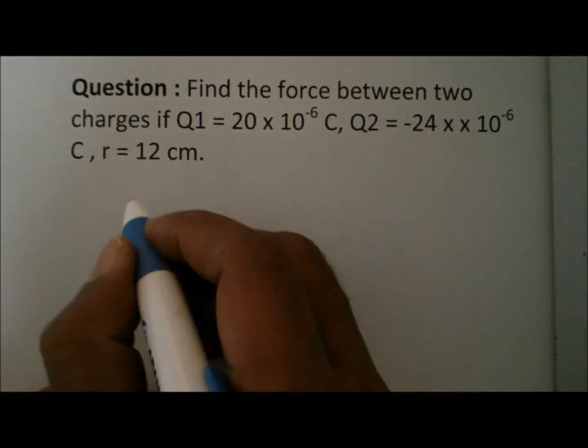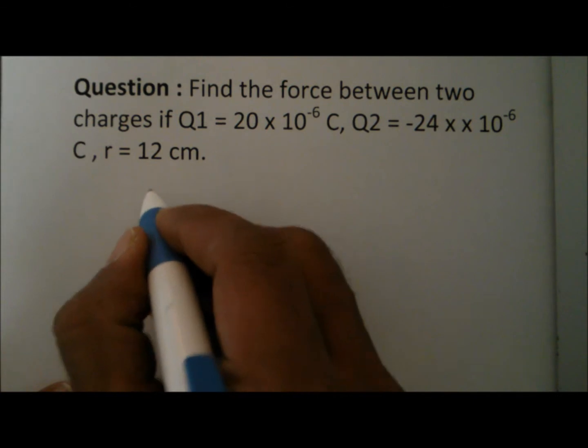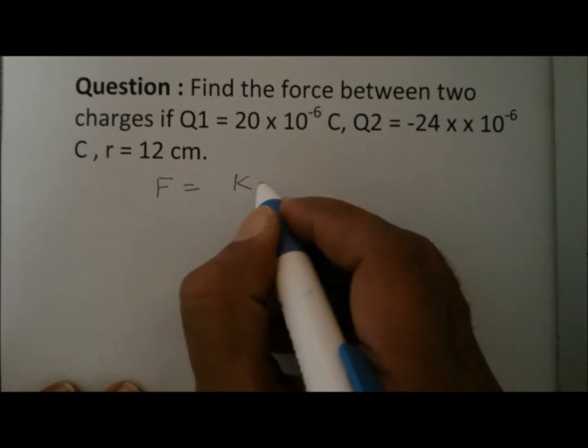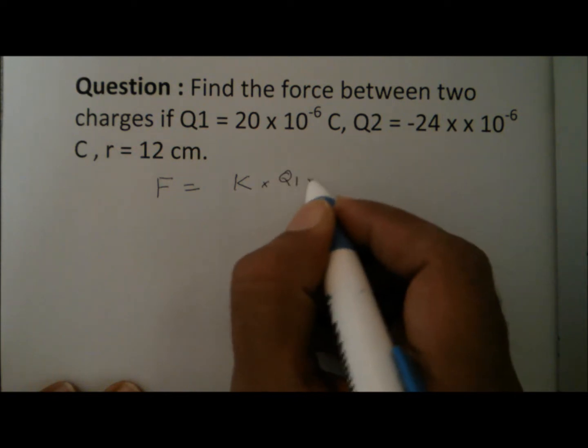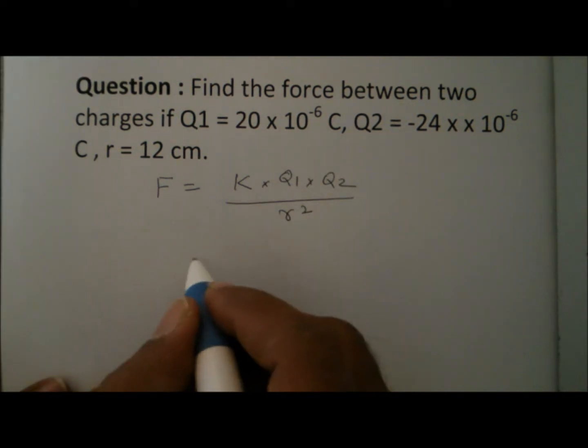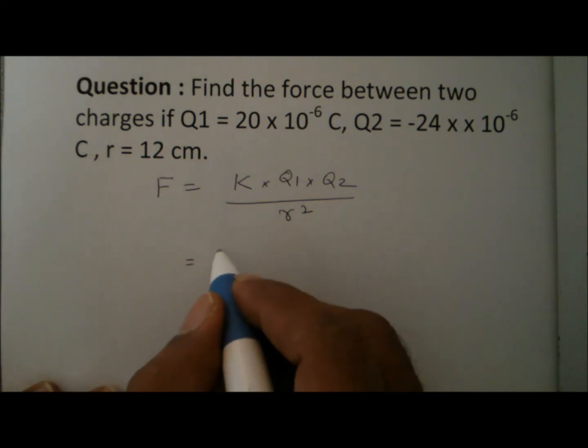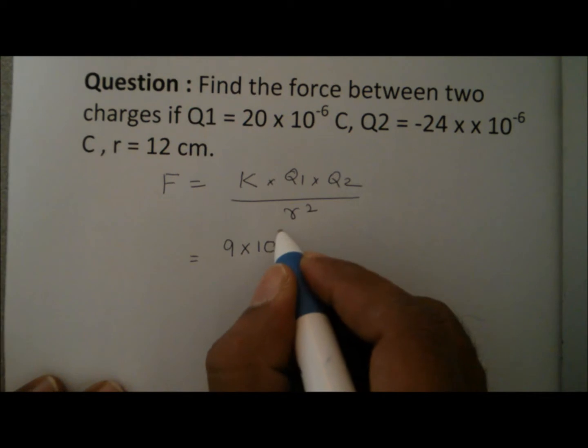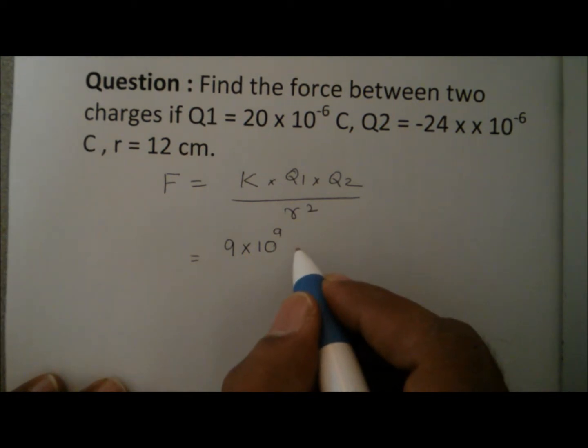That's an easy question. According to Coulomb's law, the force between two particles is F equals K into Q1 into Q2 divided by R squared. Now, the value of the constant K is 9 into 10 to the power of 9. Of course, it's Newton meter squared per Coulomb squared.